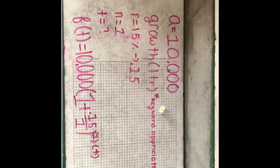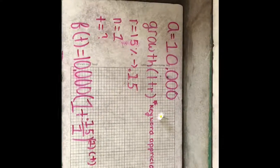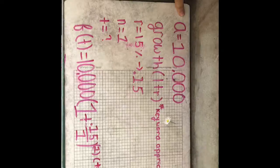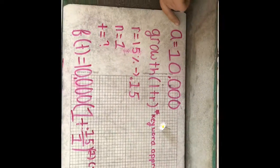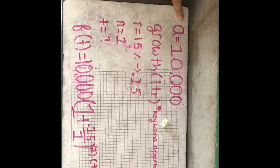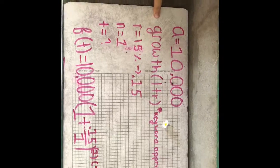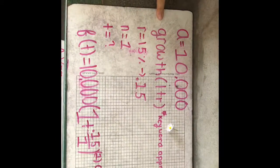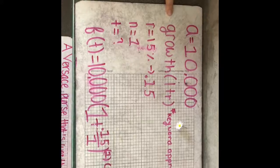So when you're trying to find the equation, it tells you that the starting amount is $10,000, so a equals $10,000. The next thing it says is that it appreciates, meaning that it's growing, so the equation you'll be using is 1 plus r.